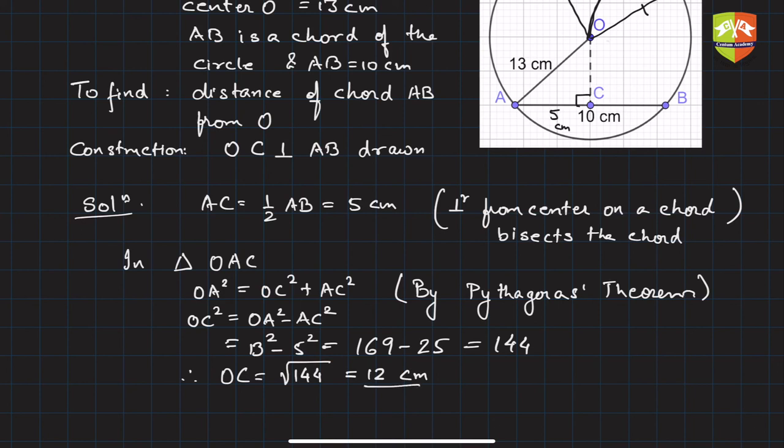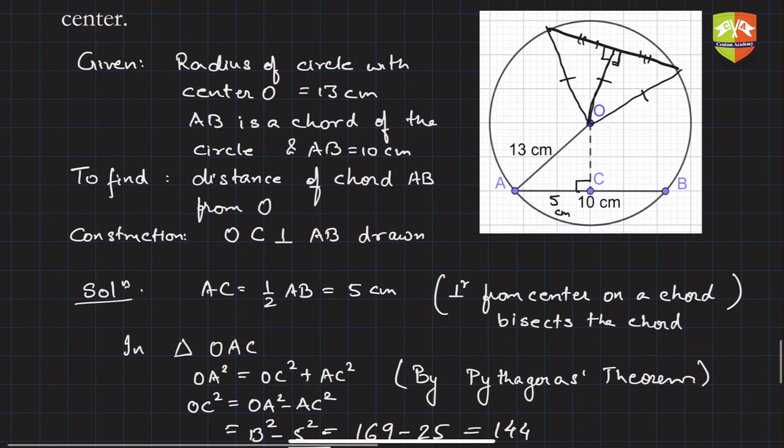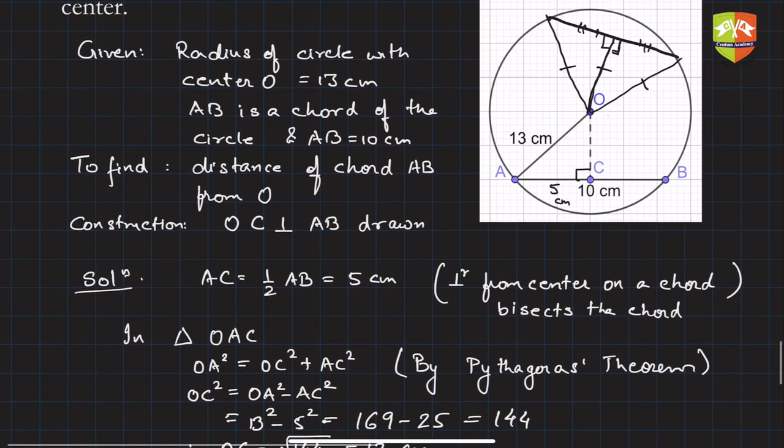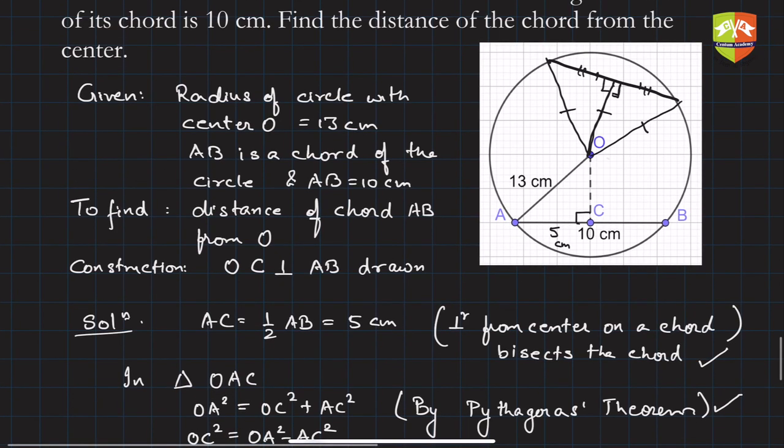Hence we could find out OC. This is the solution. What is the learning? The application of the theorem: perpendicular from center on a chord bisects the chord, and then Pythagoras theorem. These are the two things which we applied in this particular problem, and hence we got the result as 12 centimeters.